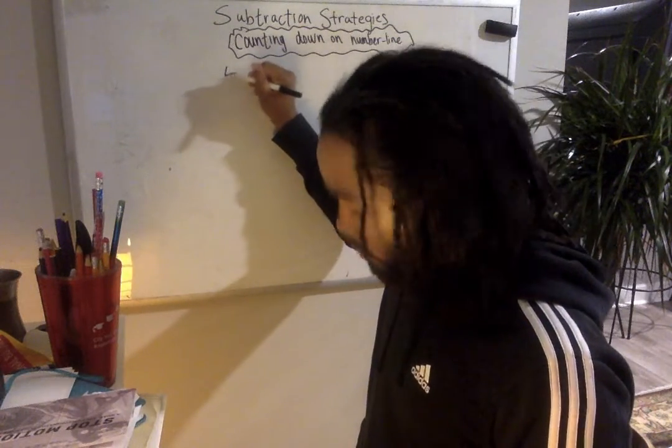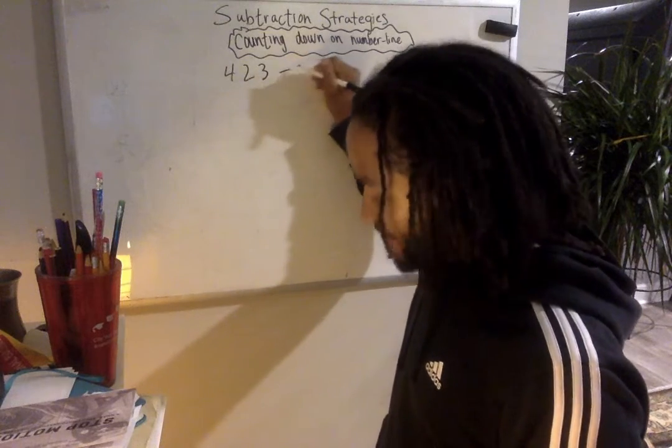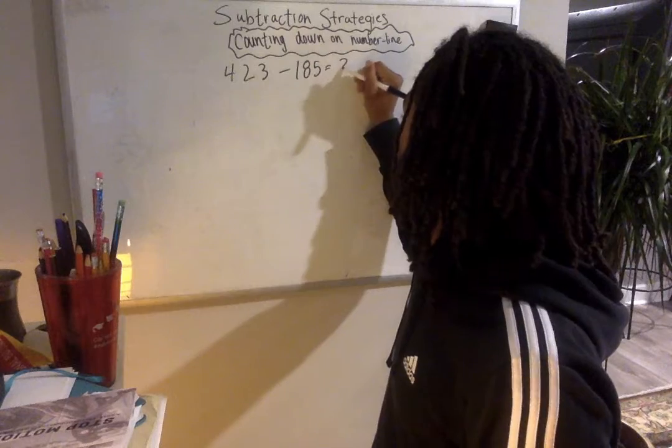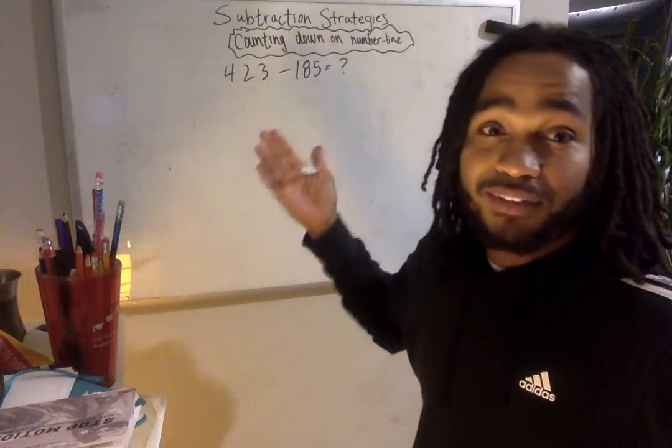I'm going to write this equation. 423 minus 185 equals an unknown number. It's unknown. This is actually algebra.